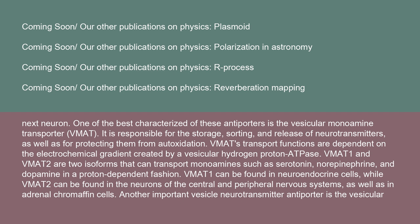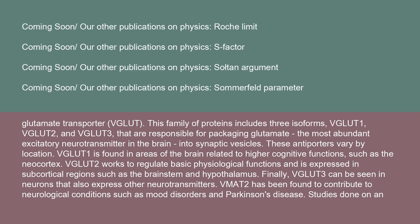Another important vesicle neurotransmitter antiporter is the vesicular glutamate transporter (VGLUT). This family includes three isoforms — VGLUT1, VGLUT2, and VGLUT3 — responsible for packaging glutamate, the most abundant excitatory neurotransmitter in the brain, into synaptic vesicles. These antiporters vary by location: VGLUT1 is found in areas related to higher cognitive functions such as the neocortex; VGLUT2 regulates basic physiological functions and is expressed in subcortical regions such as the brainstem and hypothalamus; and VGLUT3 can be seen in neurons that also express other neurotransmitters.